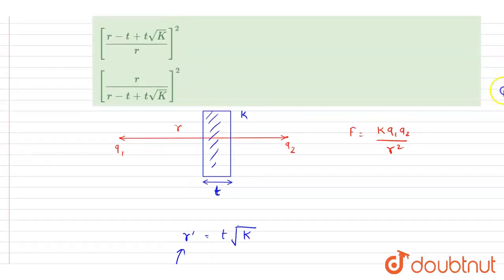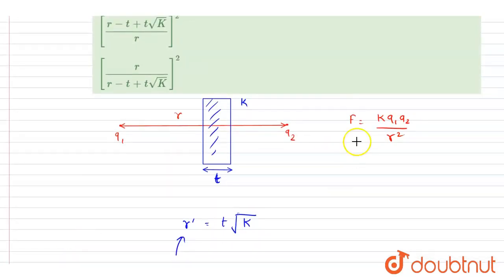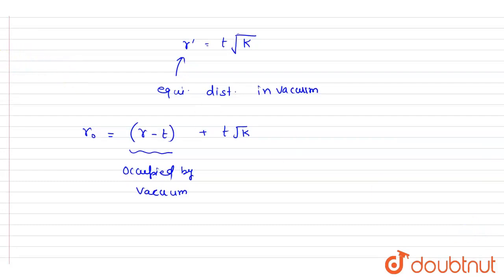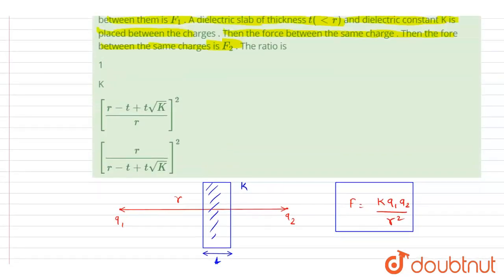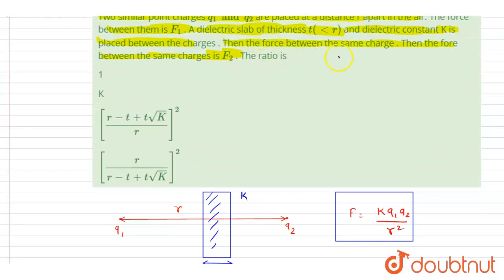And as we can see here, the Coulombic force is inversely proportional to distance between them squared. And we want the ratio of F1 by F2.